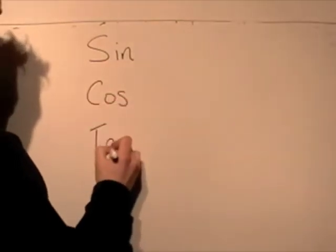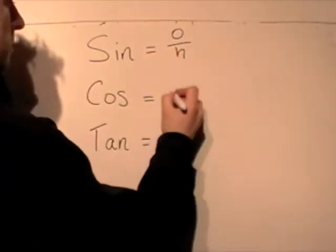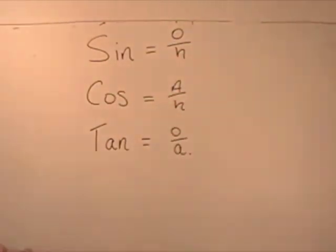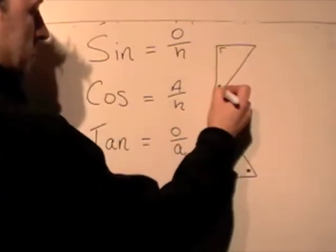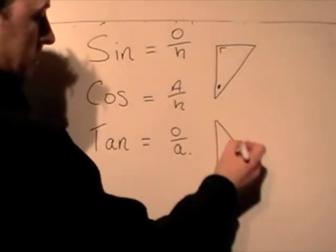Okay, here's a quick reminder of what we've been doing last week. We have sine, cosine, and tan, which is o over h for sine, cosine is a over h, and tan is o over a.